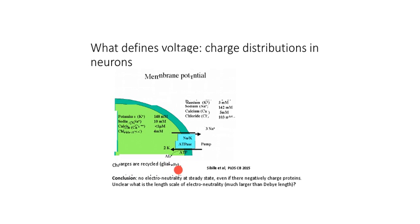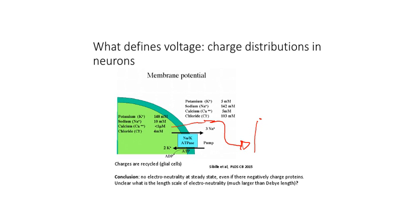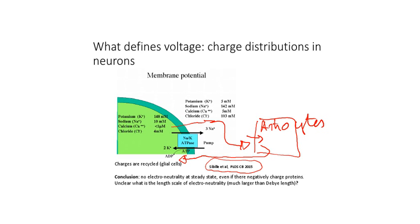Charges such as potassium are not coming back directly after escaping to the neurons. Usually they escape and are pumped out or pumped in inside glial cells or astrocytes. There is a cycle of potassium before it is able to come back to the neuronal cells.